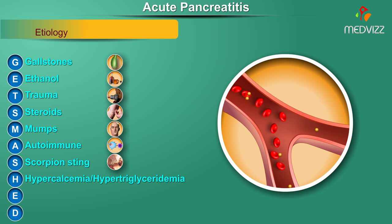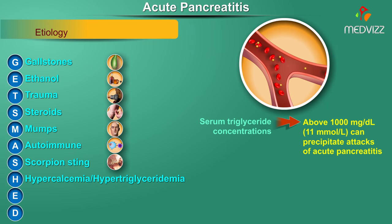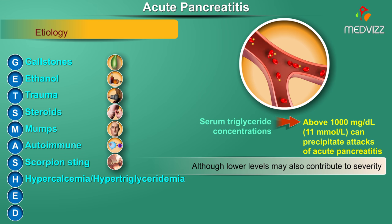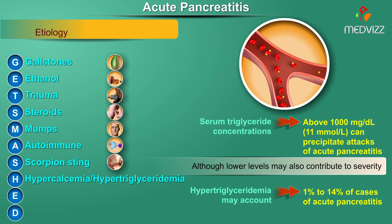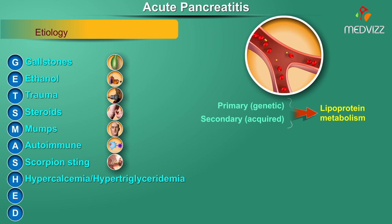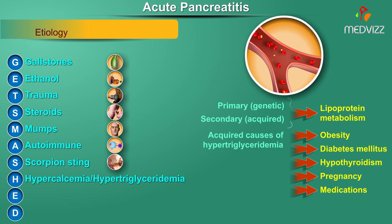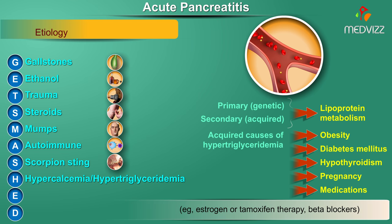H stands for hypercalcemia or hypertriglyceridemia. Serum triglyceride concentrations above 1000 milligrams per deciliter (about 11 millimoles per liter) can precipitate attacks of acute pancreatitis, though lower levels may also contribute to severity. Hypertriglyceridemia may account for 1 to 14 percent of cases. Both primary (genetic) and secondary (acquired) disorders of lipoprotein metabolism are associated, with acquired causes including obesity, diabetes mellitus, hypothyroidism, pregnancy, and certain medications like estrogen, tamoxifen, and certain beta blockers.